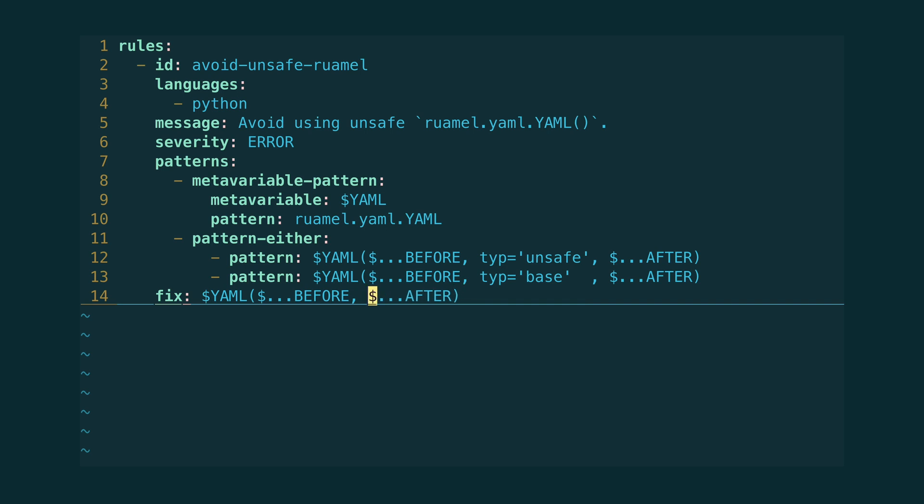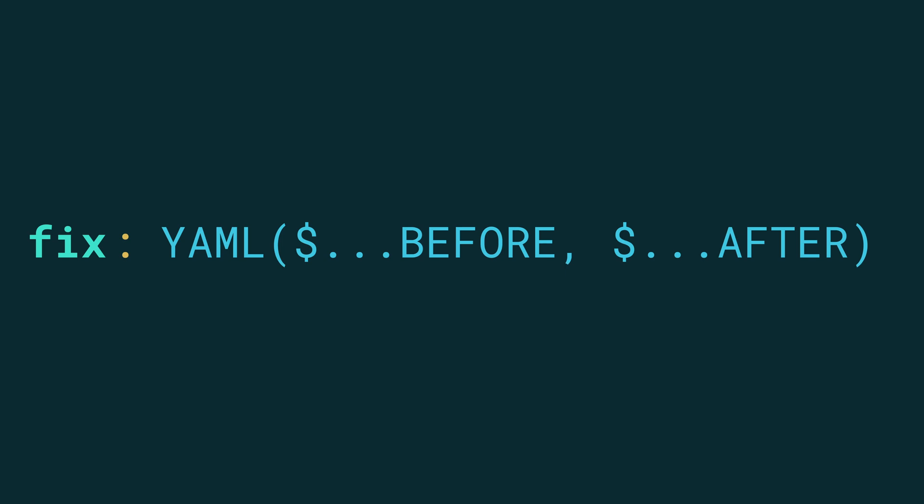This is what the fix will look like. The thing about ellipsis is that they can also capture nothing, so it's possible that the before or after metavariable ellipsis is actually just an empty string. If we replace this with an empty string, you'll see that the text-based autofix would write one comma too many. This would not result in valid code.